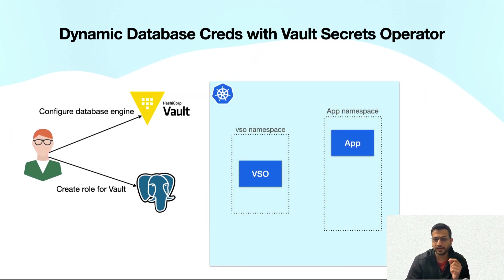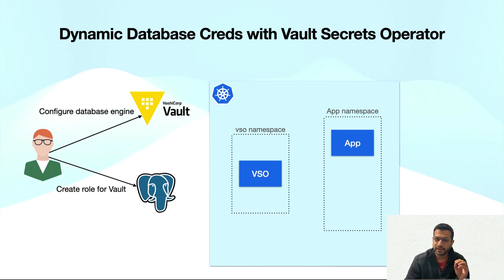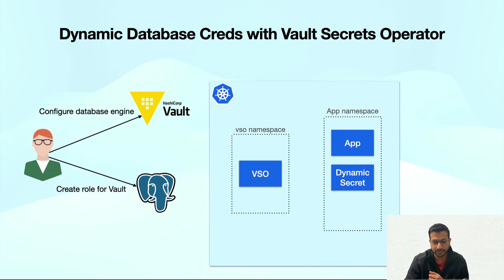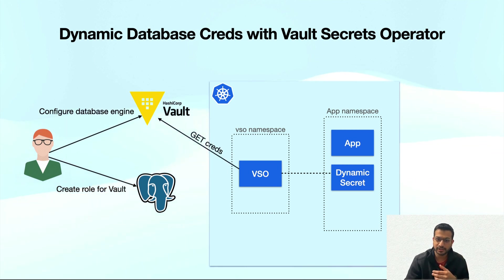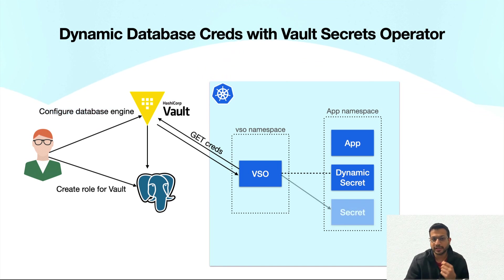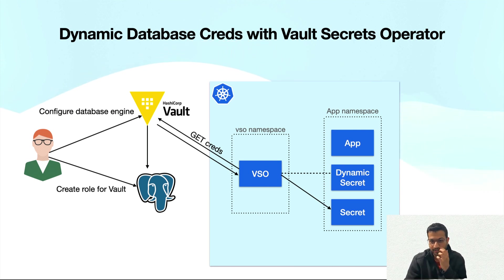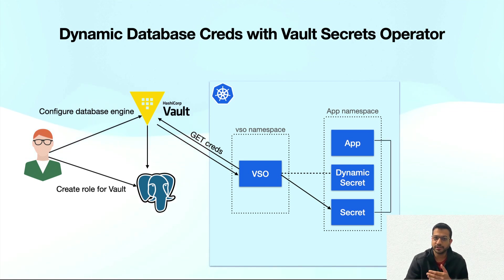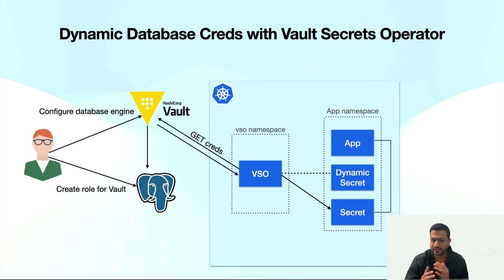Now let's see how VSO is actually going to fetch these dynamic credentials and make them available to your application. For dynamic credentials we are going to create a custom resource called VaultDynamicSecret, which includes the specification to manage a dynamic secret — in our case, a database credential. VSO uses this specification to request a new credential. As Vault receives the request, it communicates with the Postgres database to generate a new credential and return it to VSO. VSO then synchronizes the returned vault secret to a native Kubernetes secret object, creating or updating it as needed. This secret object can be mounted or used by your application just like any other Kubernetes secret.